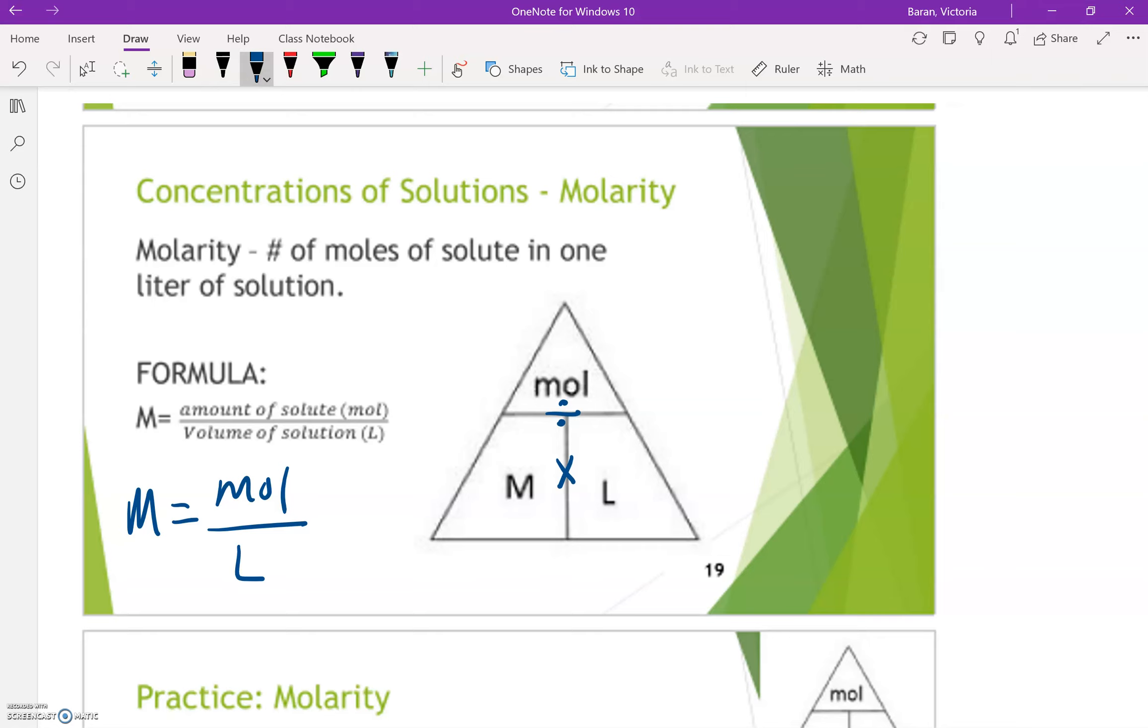If you're not looking for molarity, how can you use the triangle to find something else? So let's talk about molarity first though. If you're looking for molarity, notice the other two variables, it would be moles divided by liters. That's why it's big M equals moles divided by liters.